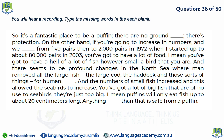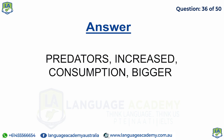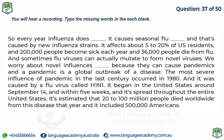Every year, influenza causes seasonal flu outbreaks from new influenza strains, affecting about five to twenty percent of U.S. residents — 200,000 people become seriously ill and 36,000 die from flu each year. Sometimes flu viruses mutate to form novel viruses, and novel influenza subtypes can cause pandemics. The most severe influenza pandemic in the last century occurred in 1918, caused by a flu virus called H1N1. It began in the United States around September and within five weeks had spread throughout the entire country. An estimated 20 to 100 million people died worldwide, including 500,000 Americans.